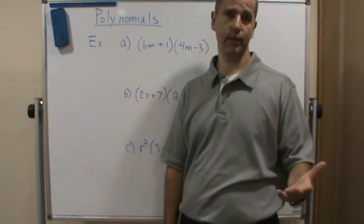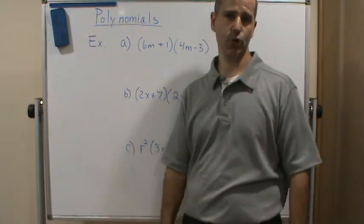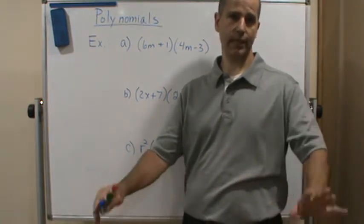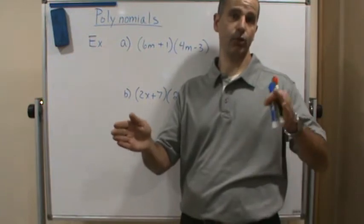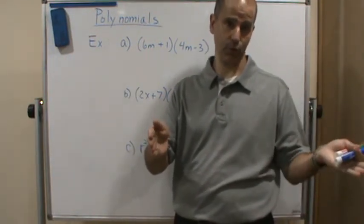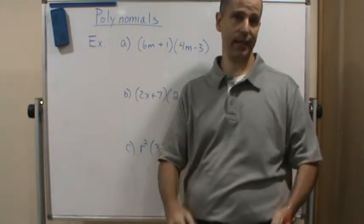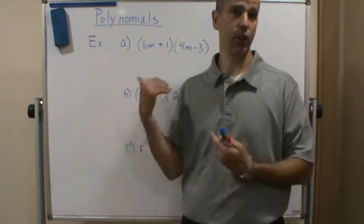just using the distributive property twice. It's the exact same thing I showed you in the previous video. They call it the FOIL method because you do the first two, then the outside two, then the inside two, and the last two. But it's exactly the same process, so there's really no difference in what I'm going to show you.